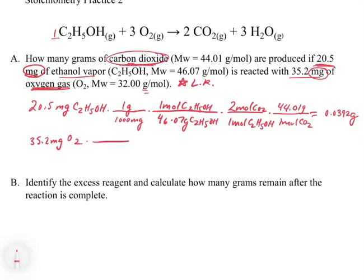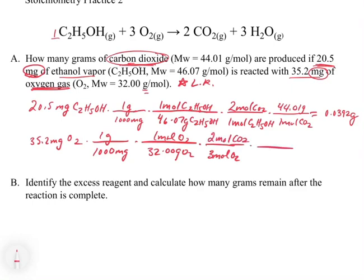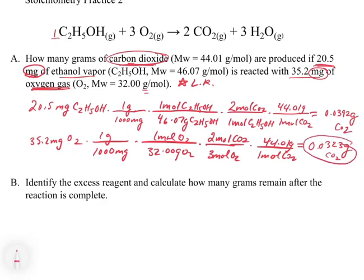The problem asks for grams, so we're good. Now let's convert 35.2 milligrams of O2 to grams and use the molecular weight of O2, which is 32.00 grams per mole. From the balanced equation, for every three moles of O2 we get two moles of CO2, and for every mole of CO2 we get 44.01 grams. That gives 0.0323 grams. This shows why you can't just pick the smallest mass — the 20.5 mg of ethanol actually produces more CO2 than the O2 does. The O2 gives the least product, so it's our limiting reagent and its result is our theoretical yield.